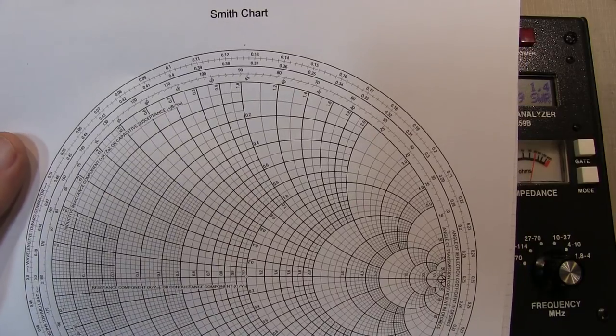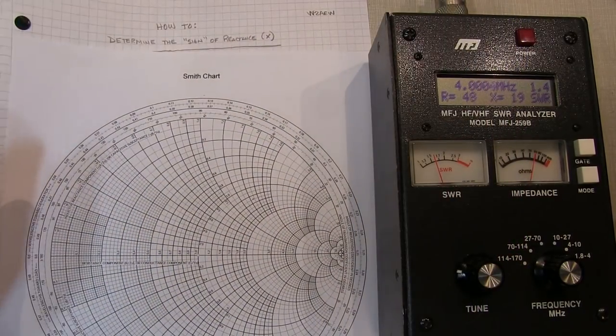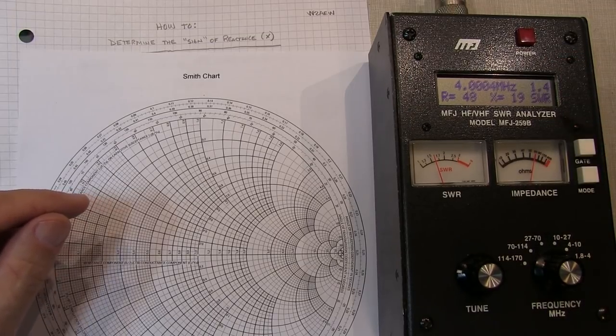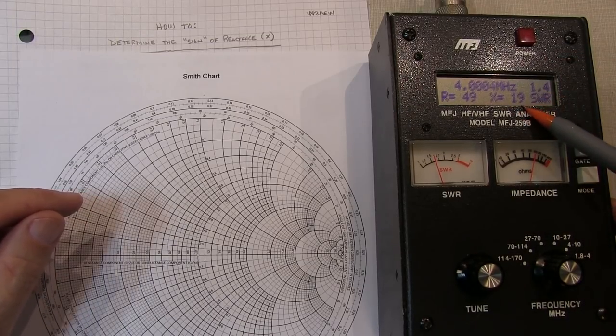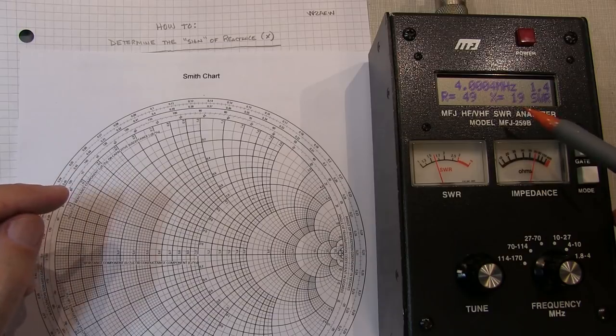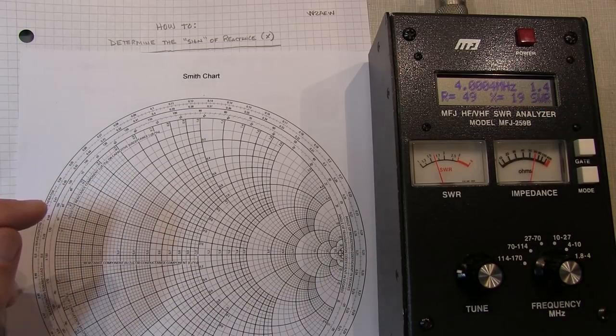One problem that many people run into is that some of the very common antenna analyzers that are out there, like this MFJ259B, don't tell you the sign of the reactive component. In other words, they don't tell you whether X is positive or inductive or if X is negative or capacitive. So how do we determine what that is?